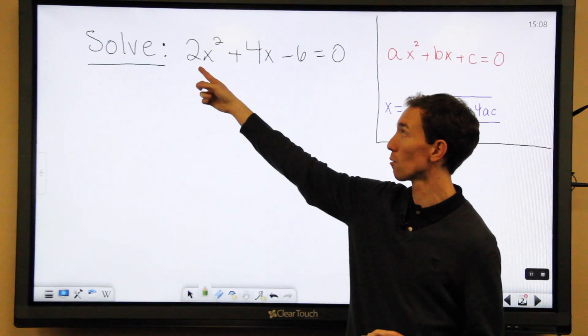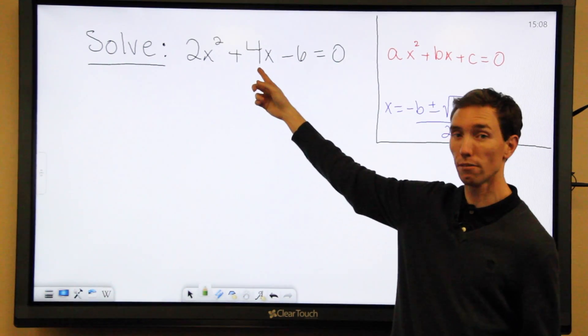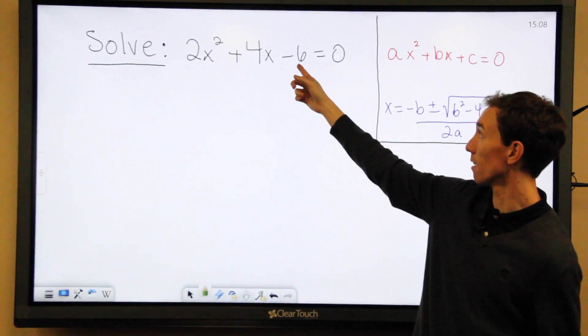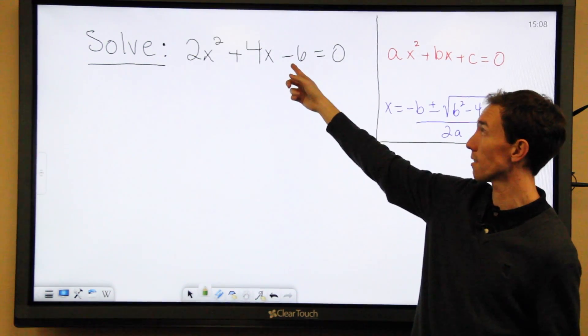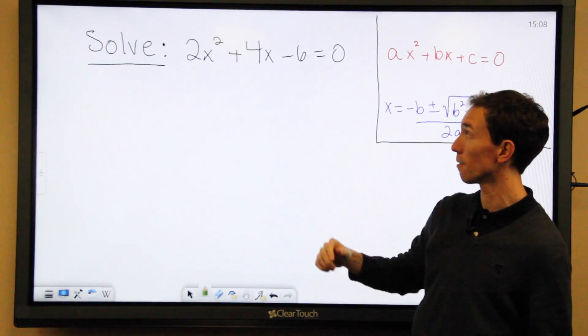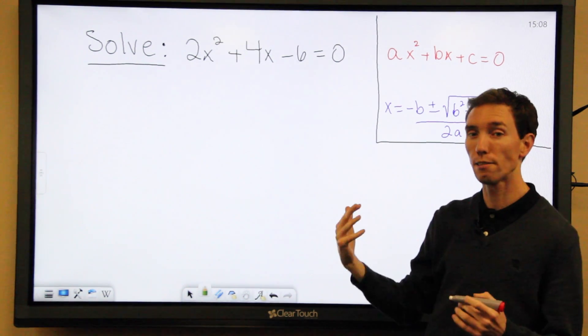a is the number in front of your x squared term, b is the number in front of your x term, and c is the number all by itself, including this sign, so make sure it's negative because there's a minus sign there. So we're going to plug them in and see what we get.